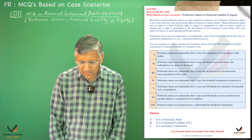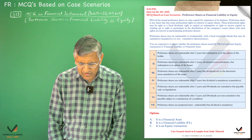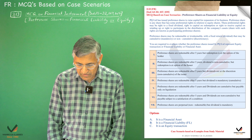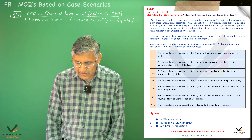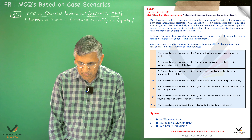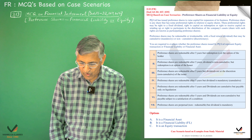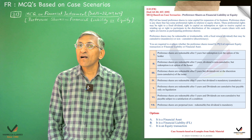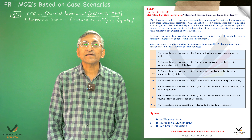For example, preference shares may be redeemable or irredeemable. The fixed recurrent dividend may be cumulative, mandatory, or non-cumulative, which is called discretionary.